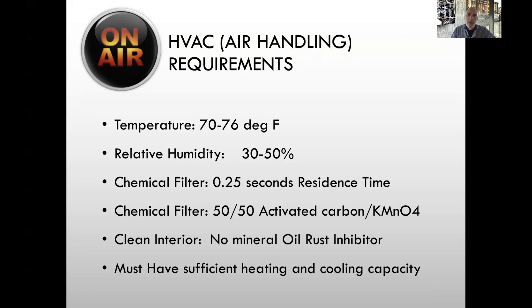The air handling system must provide a very stable climate — temperature and relative humidity in a narrow range — because the stability of the culture system is essential for success rates. The chemical filter needs a long residence time; 0.25 seconds is considered appropriate — the longer the better, though more expensive. The filter should consist of a 50/50 ratio of activated carbon and potassium permanganate, though other products and ratios are also used. The ductwork interior must be clean; no mineral oil rust inhibitors, and the system must have sufficient heating and cooling capacity.